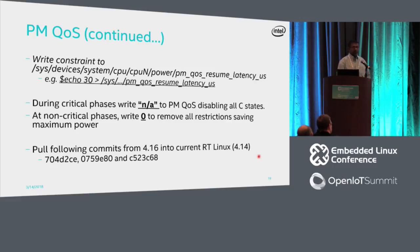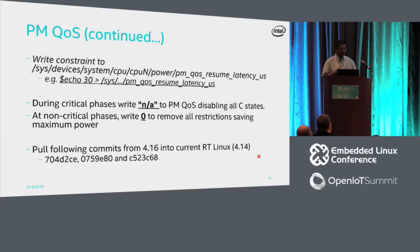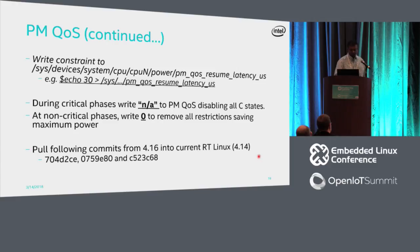One more thing to note is that the system-wide interface, the user-space interface, and the per-core interface are a little bit different. You can refer to the Linux Foundation wiki page for details. This information is currently missing from the PM QoS documentation, so you may need to refer to the wiki or file a bug for the documentation.